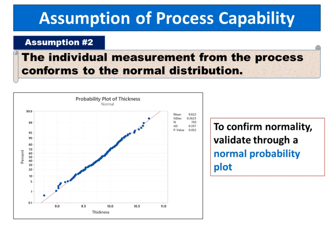The second assumption is that the individual measurements from the process conform to the normal distribution. To confirm normality, validate through a normal probability plot.